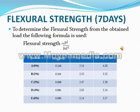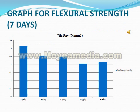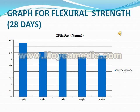Flexure Strength for 7 days: Formula — Flexure Strength = P×L / (B×D²). Specimens A (0%), B (1%), C (2%), D (4%), E (6%). Load in kN: 0.126, 0.101, 0.098, 0.081, 0.085. Flexure Strength at 7 days in N/mm²: 3.14, 2.53, 2.47, 2.03, 2.14. Flexure Strength at 28 days in N/mm²: 4.28, 3.52, 3.38, 3.40, 3.27. Graphs for flexure strength at 7 days and 28 days shown.